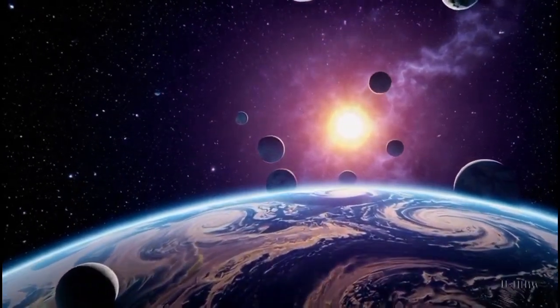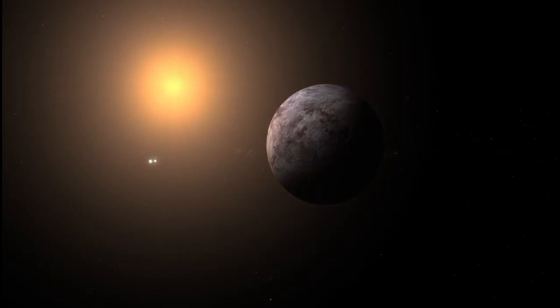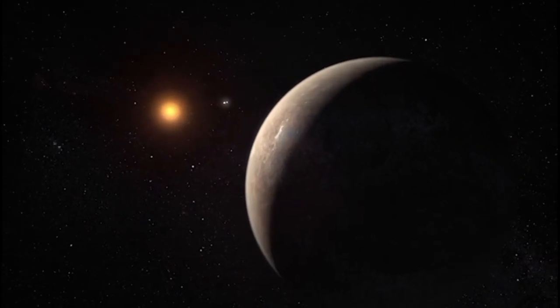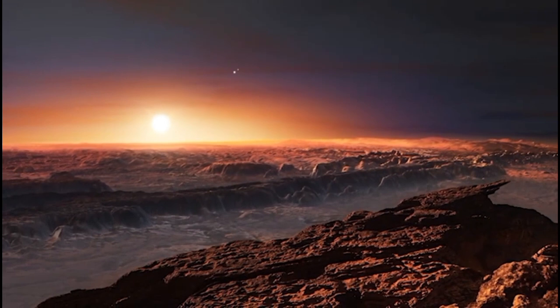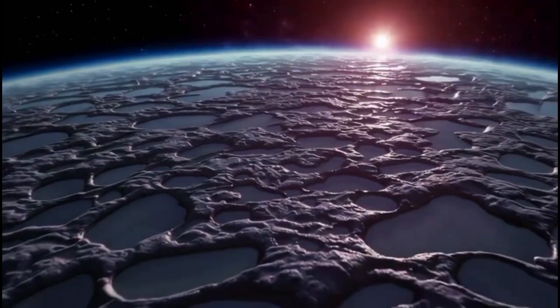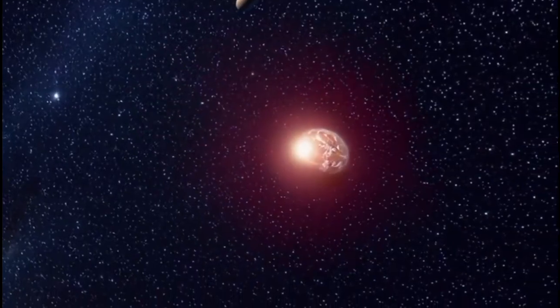However, brightness is not the only outstanding feature of the star. Betelgeuse is known for its distinctive reddish color, which is due to its cool surface. With a temperature of about 3,500 Kelvin, this temperature is much lower than the surface of our Sun, which reaches approximately 5,500 Kelvin.